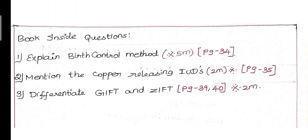Next, second question, page number 34. Mention the copper releasing IUDs, page number 35, left side key. Copper releasing IUDs include there are four types. Important, 2 mark question.